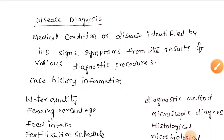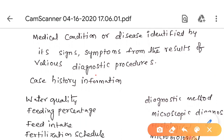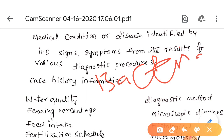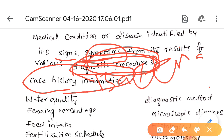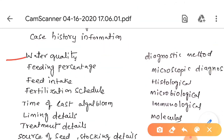Next is disease diagnosis. When a fish or shrimp is infected with a virus or bacterial disease, we can identify the disease through its signs or symptoms. We can also go for diagnostic procedures to find out the disease. Disease can be identified through two approaches: case history information and diagnostic methods.